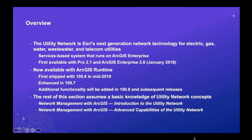The utility network is Esri's next-generation network technology for electric, gas, water, wastewater, and telecom utilities. The system is completely services-based, running on ArcGIS Enterprise. It was first introduced into the ArcGIS platform with ArcGIS Pro 2.1 and Enterprise 10.6. It is now available with ArcGIS Runtime — our first release was 100.6 in mid-2019 and we've added enhancements in 100.7. This is an iterative development process and we'll be adding additional functionality in 100.8 and subsequent releases.